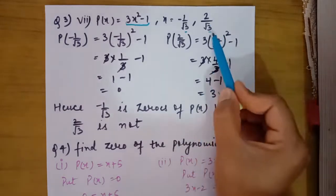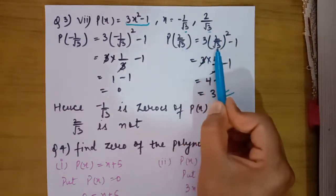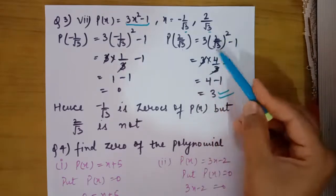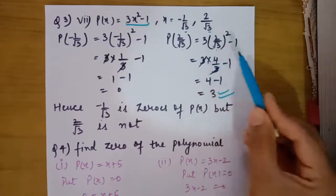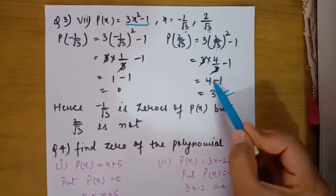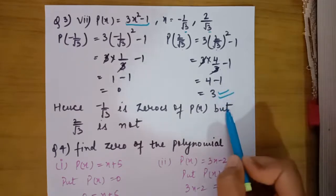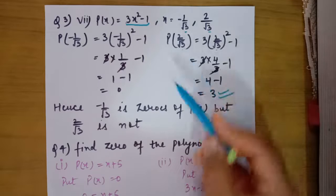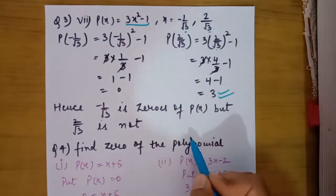In the other part, we replace the variable with 2 upon root 3. Because of the square we get 4 upon 3; the 3 cancels, giving 4 minus 1 equals 3, which is not zero. So 2 upon root 3 is not a zero of the given polynomial.